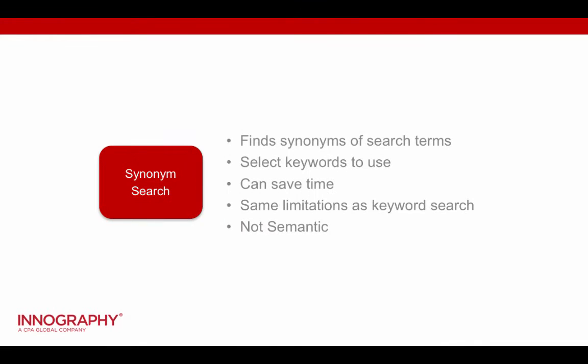To overcome that, some providers in the industry have come out with what is called synonym search. This basically takes a block of text, pulls out the key phrases, and finds synonyms for those search terms. You can sometimes tune which keywords to use in that search, which can save you some time for finding synonyms. But it has inherently the same limitations as keyword search — someone has to maintain that dictionary, and new terms, unexpected terms, or unusual terms from other industries will not be captured in some cases.